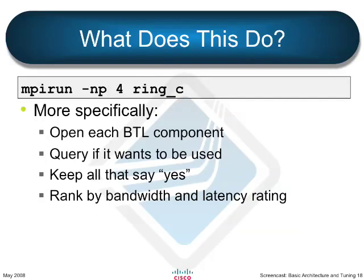More specifically, OpenMPI will open each BTL plugin it finds and query that plugin — asking if it wants to be used. It tracks all the ones that say yes and ranks them by bandwidth and latency. For example, if you have a DDR InfiniBand network and an SDR InfiniBand network both running, OpenMPI will auto-sense the bandwidth available on both and stripe proportionally according to how much network capacity is available.